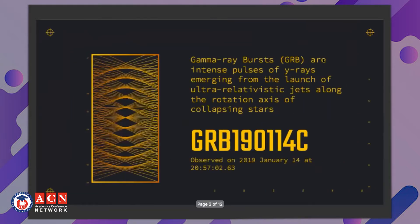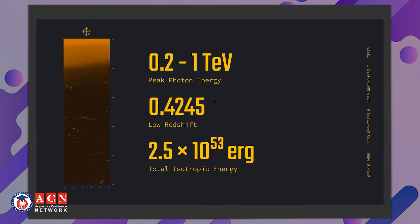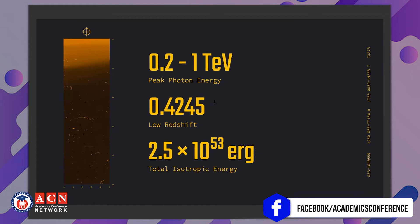GRB 190114C is an example of a gamma-ray burst — intense pulses of gamma rays that emerge from the launch of ultra-relativistic jets along the rotation axis of collapsing stars. This particular gamma-ray burst was observed on January 14, 2019, and is of particular importance in astrophysics because it was the highest energy GRB ever recorded, with a peak photon energy of 0.2 to 1 tera-electron volts, a redshift of 0.42, and a total isotropic energy of 2.5 × 10^53 ergs.